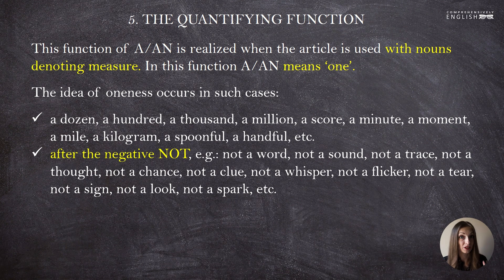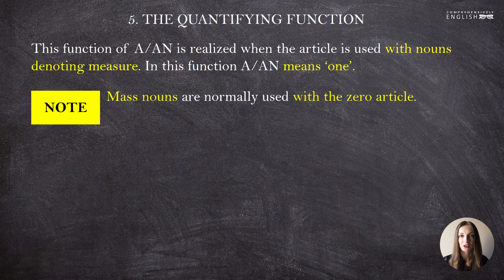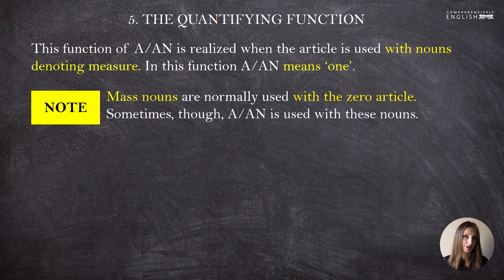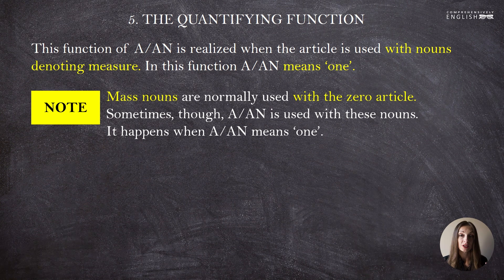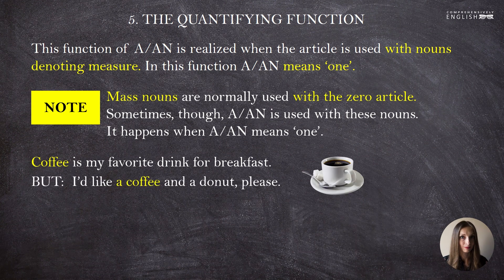Another case: set phrases where 'a' or 'an' expresses oneness — one at a time, at a draught, at a glance, in a split second, in a nutshell, at a pinch, in a rush, in a fit of laughter or rage or anger. Note that mass nouns normally use the zero article — 'rice is good for your health' — but 'a' or 'an' can appear with them in the quantifying function when it means 'one': 'I'd like a coffee and a donut, please' — a coffee means one portion of coffee.